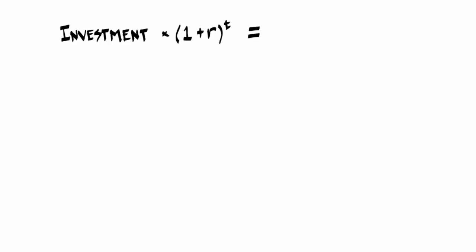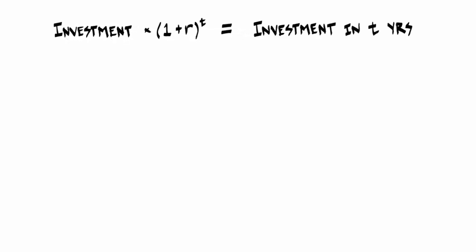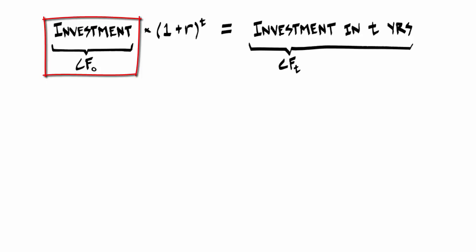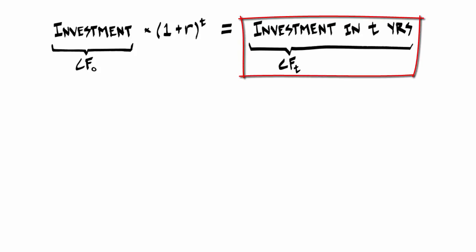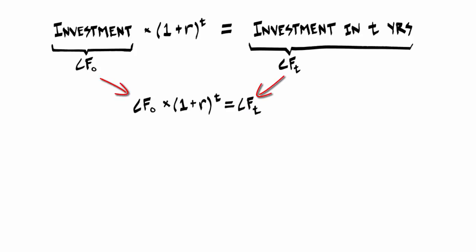So let's just ruin this illusion of complexity with some simple math. We now know that investment multiplied by the sum of 1 plus R raised to the power T for time period equals the value of that investment in T years. If we then substitute cash flow in time period zero, which is to say today, for investment in the equation above, and cash flow in time period T for investment in T years, then we get this formula, which is the same, just fewer words.